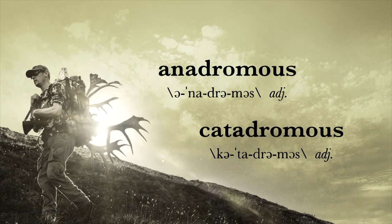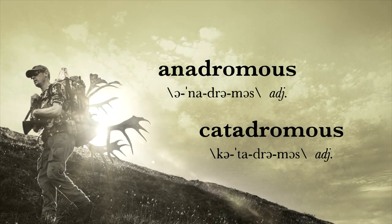An anadromous fish is a fish whose life history is such that they are born in a freshwater environment and then migrate to a saltwater environment at some point in their life to feed, and then once they mature, they migrate back to freshwater to lay eggs, and then that pattern repeats itself.